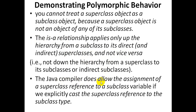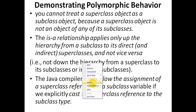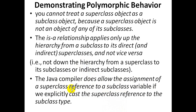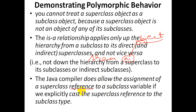The Java compiler does the assignment of a superclass reference. Reference is the area. Object reference — the object reference is the object reference. This is the superclass to a subclass variable. This is the superclass reference to a subclass variable. This is explicitly cast.